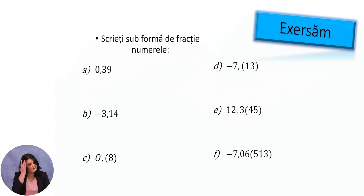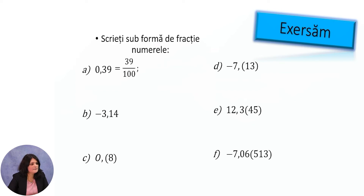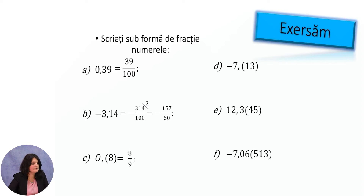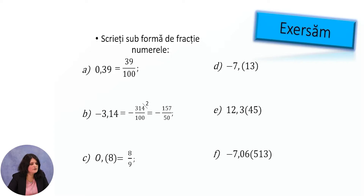Let's practice. Write the following numbers as fractions. First: 0.39 equals 39/100 — it is a non-periodic number, so we divide by 1 followed by as many zeros as decimal places. Minus 3.14 equals minus 314/100; simplifying by 2 gives minus 157/50. 0.(8): since it is a simple periodic number, we write 8/9 — one nine because there is one digit in the period. Next, minus 7.(13): the period has two digits, so we write minus 7 and 13/99.